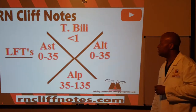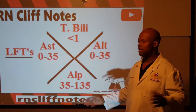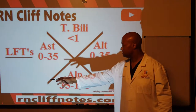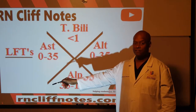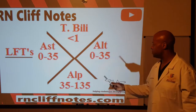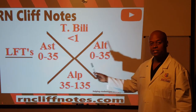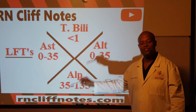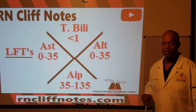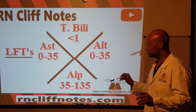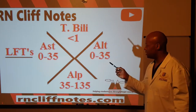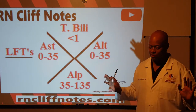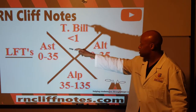Total bilirubin — super easy — less than one. Then AST: zero to thirty-five. On the opposite side, ALT: zero to thirty-five again. At the bottom, ALP: 35 to 135. So this thing is basically 35 all over the place. AST and ALT are the same — mirror reflections, zero to 35.